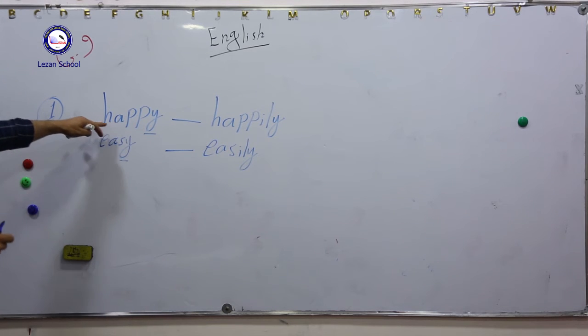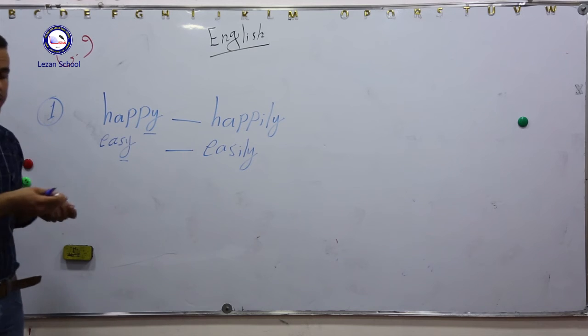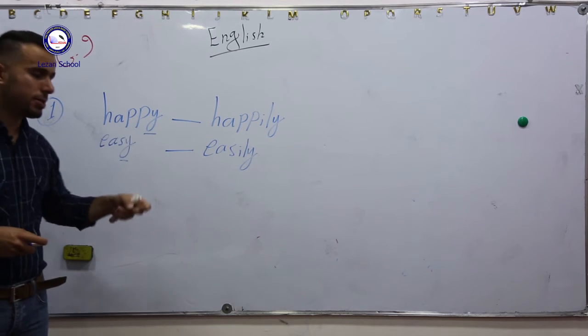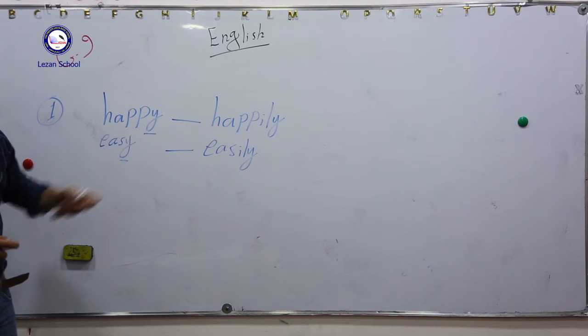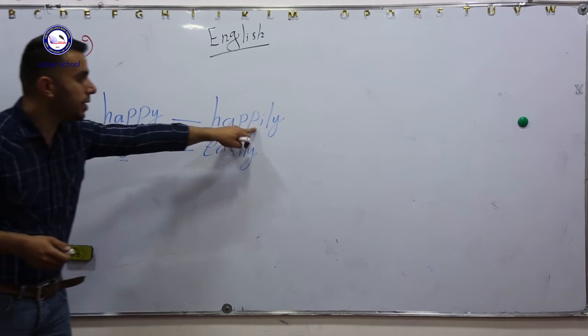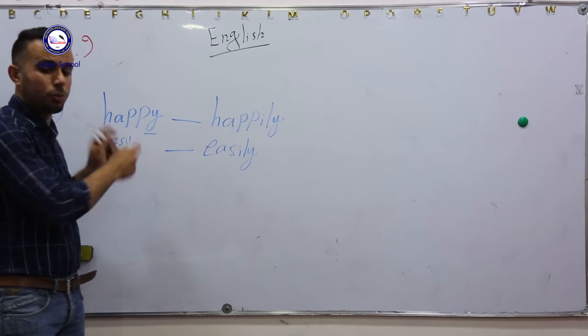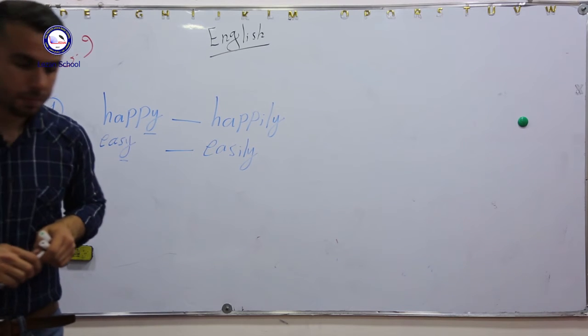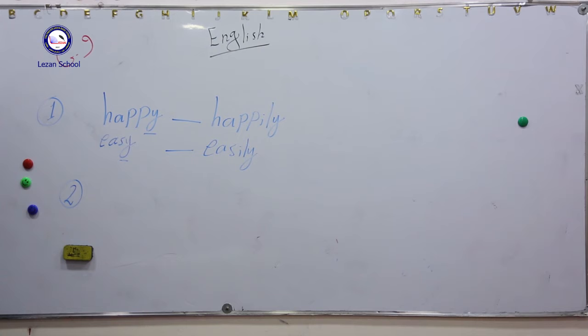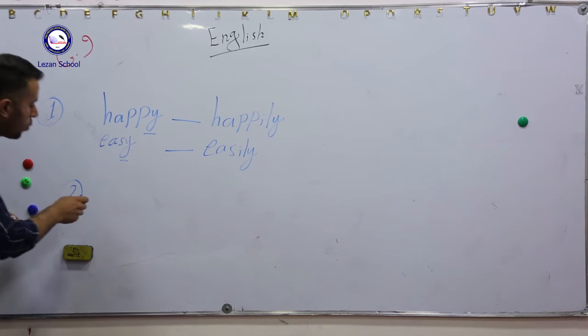As I told you, we can make an adverb out of adjective. In the exam, I will ask you to change the adjectives into adverbs. If the adjective ends with y, we have to change y into i, then add ly. This is the first group. The second group.